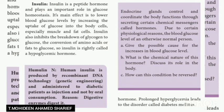We know that endocrine glands control and coordinate body functions by secreting chemical messengers called hormones. Due to certain physiological reasons, the blood glucose level of an otherwise normal person can increase. Can you give the possible cause for the increase in blood glucose level? Find it out and research it.